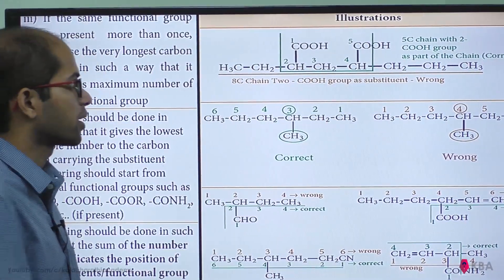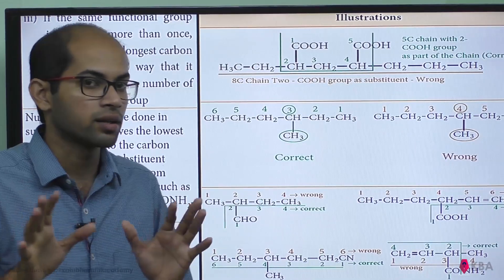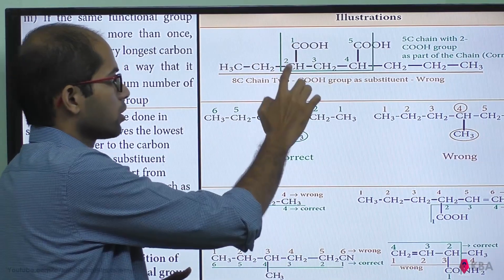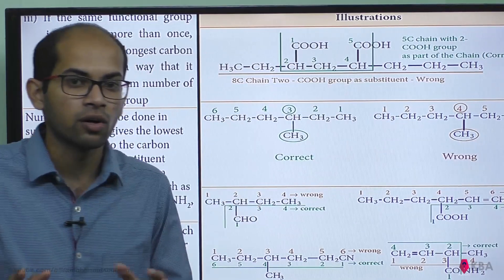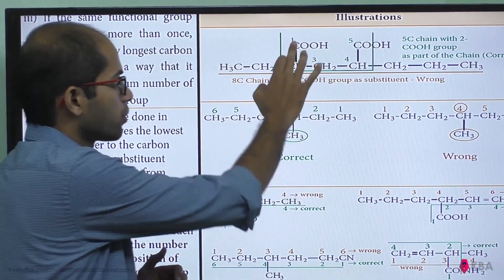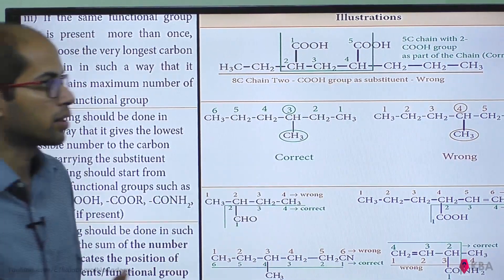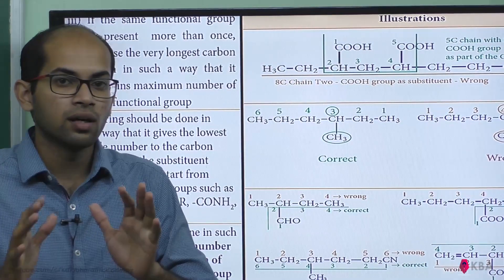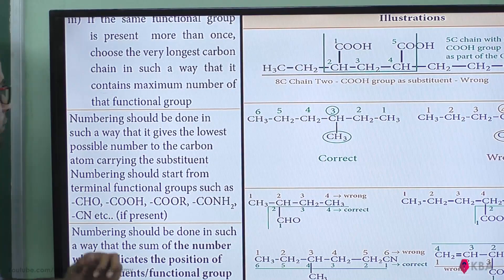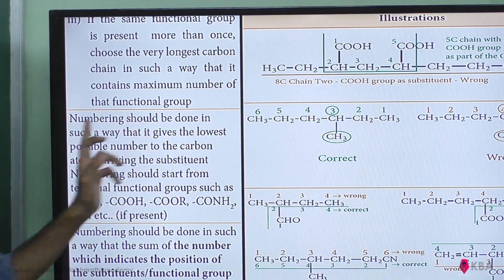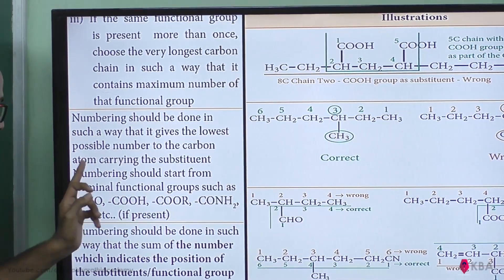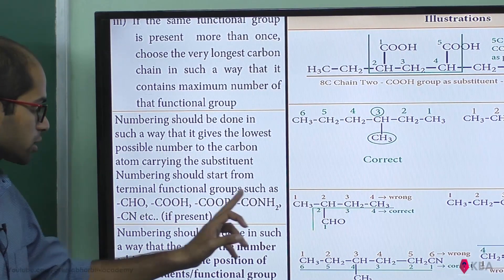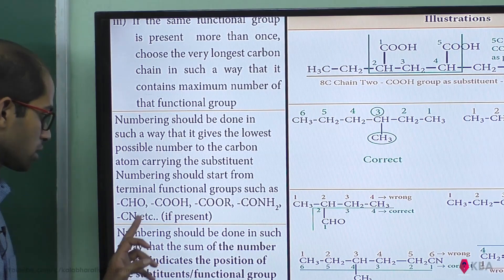But if the same carbon is present and the maximum functional group is present, the first COH gets the lowest numbering. Numbering should be done in such a way that it gives the lowest possible number to the carbon atom carrying the substituent. Numbering should start from a terminal functional group such as CHO, COOH, COOR, CO1H2, etc., if present.